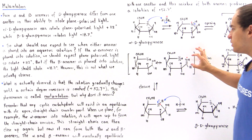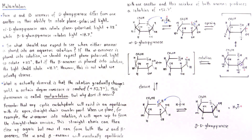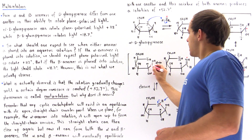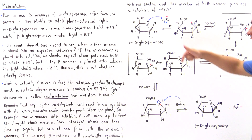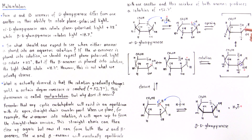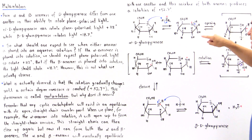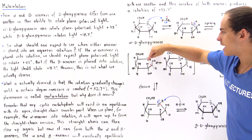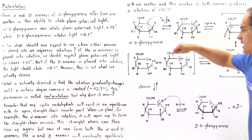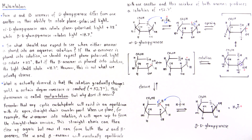Now we have our resonance-stabilized structure, as shown here, where we have a positive charge delocalized among this oxygen and this carbon. Now we can have ring closure taking place in which we follow these reverse steps — the two electrons on this oxygen can reform a bond with this carbon.